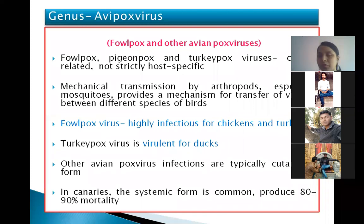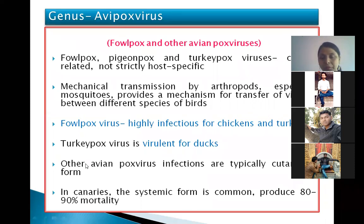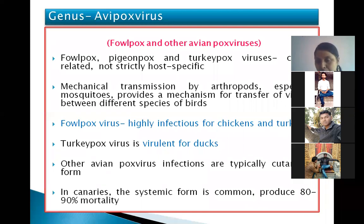Coming to the genus Avipoxvirus, it includes viruses of poultry such as Fowlpox and other avian pox viruses including Pigeonpox and Turkeypox viruses. These are named on the basis of the host for which they have affinity or from the host from which they are recovered. Fowlpox, Pigeonpox, and Turkeypox viruses are closely related and not strictly host specific, so transmission from one species to another may occur. Mechanical transmission mainly occurs through arthropods, especially mosquitoes.